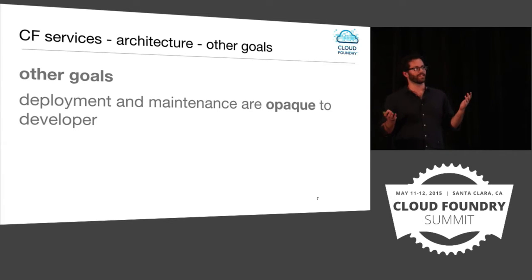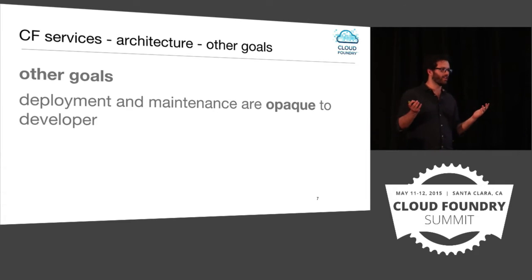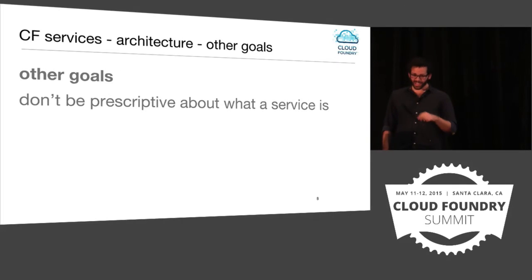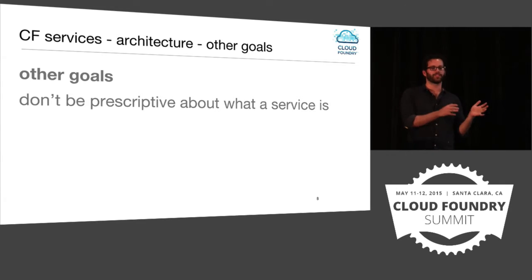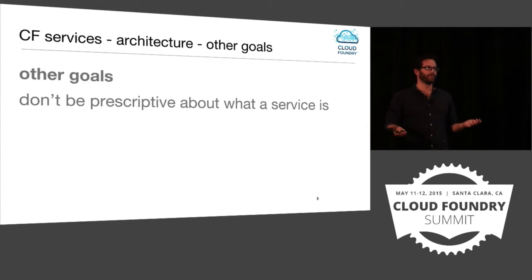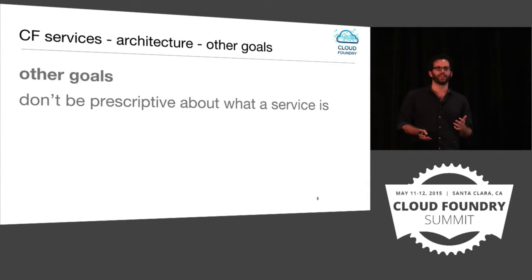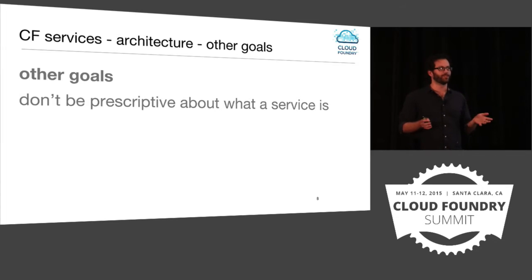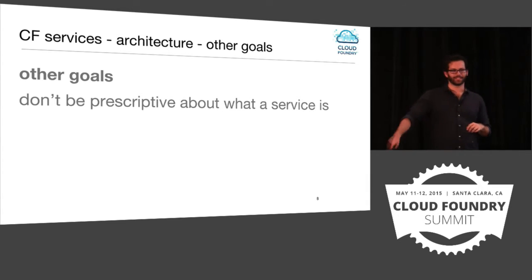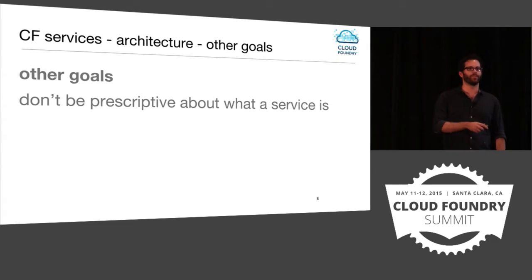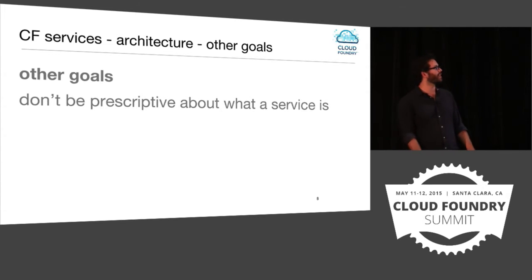We have a pretty basic requirement that services are accessible via a URL from the Cloud Foundry instance, and that's really it. We also don't want to be prescriptive about what a service is. We want to have on purpose a very loose definition. We can come up with easy examples, but what's really interesting is seeing people take our loose definition and imagine really interesting use cases — like networking as a service, for instance.